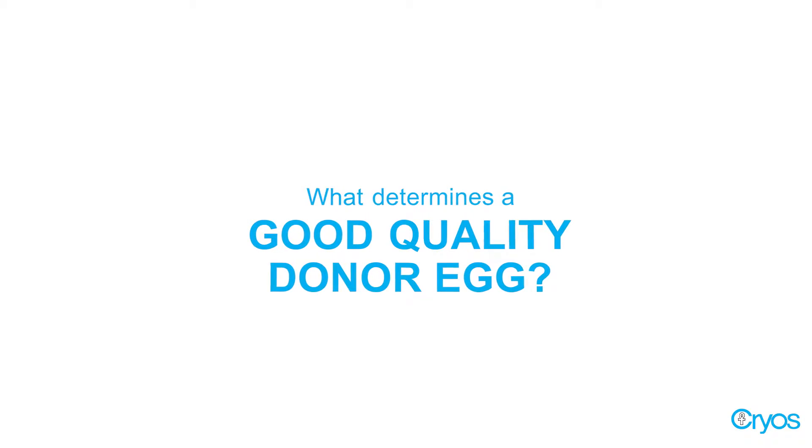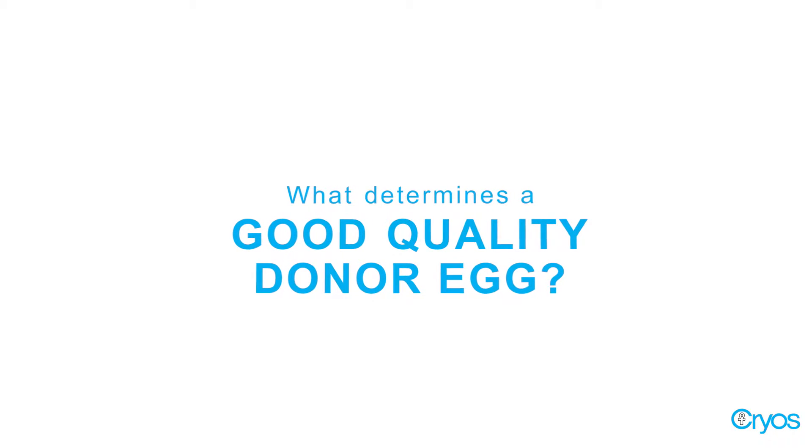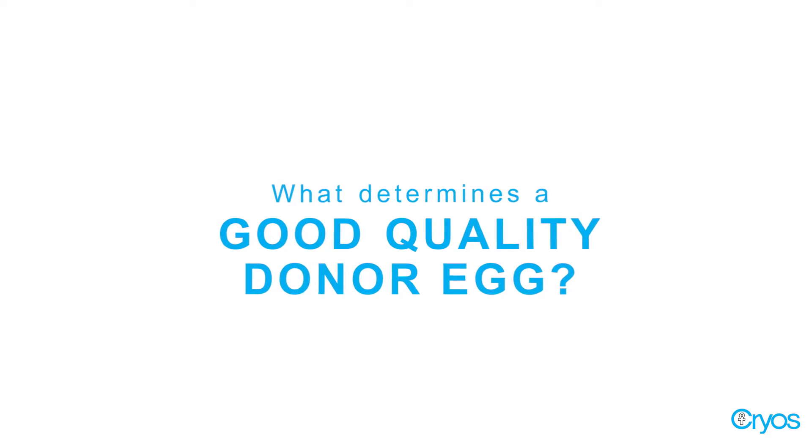All oocytes are gone by the time a woman enters menopause. The first step in defining oocyte quality is to determine if the oocyte is developed and where it is in its life cycle. A developed egg is called a metaphase 2.